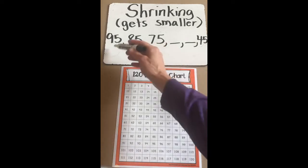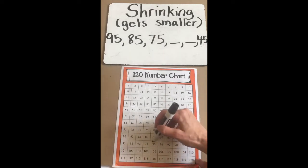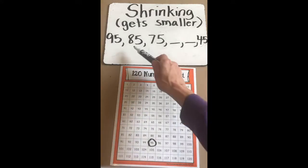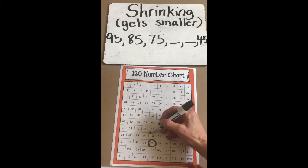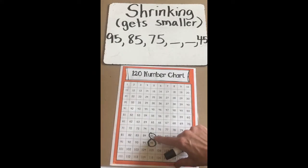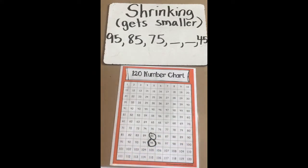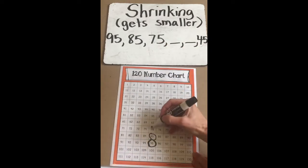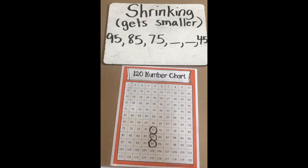Our first number is 95. This is why the number pattern is called shrinking, because our next number is 85, which means we're getting less — the numbers are getting smaller. I know that 85 is less than 95. Our next number is 75. So what are you noticing about our pattern? What's happening?